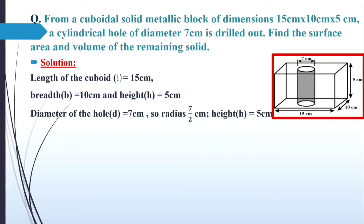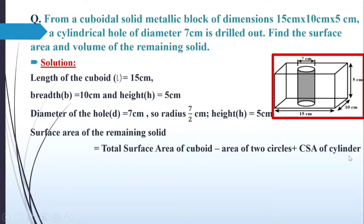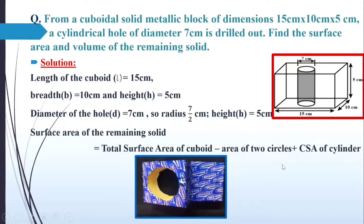Now, if I want to find out the surface area of the remaining solid, it will be equal to the area of the complete cuboid minus the area of the circular top and the circular bottom, plus the curved surface area of the cylinder. To make it simpler, I have taken a figure.